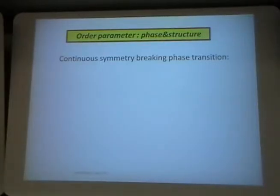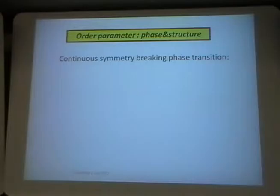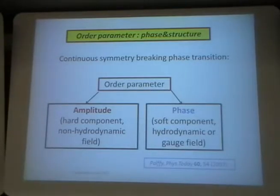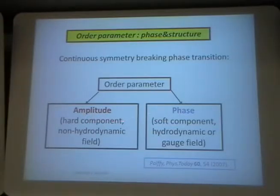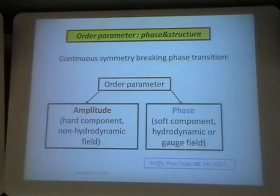If we have a symmetry breaking phase transition, you go from one phase where you have continuous options, and then just one is selected. In continuum, you usually define an order parameter which distinguishes between these two phases. This order parameter has two components. One is amplitude, or the hard component — it tells you how strongly the phase will be formed. In the ordered phase, the amplitude has one value; the system enforces one value. Another component of the order parameter is the phase, also called the gauge field, which tells how the symmetry is broken.